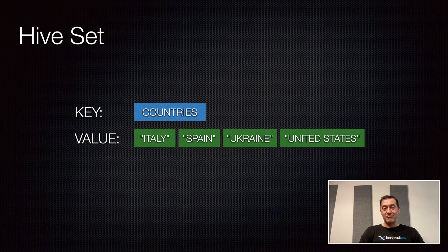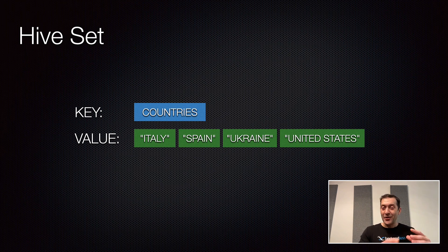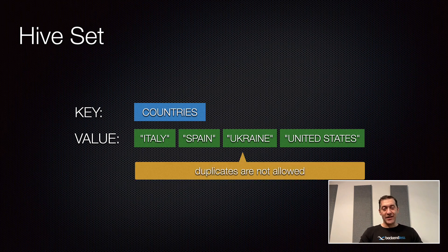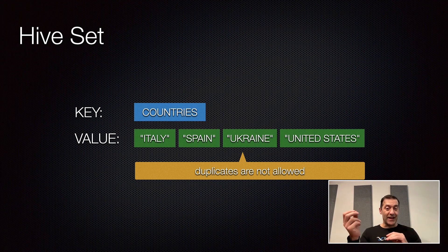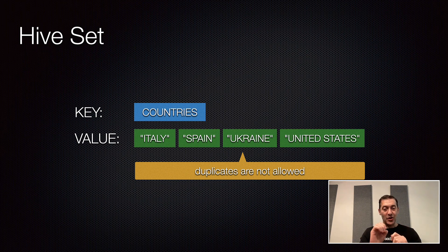Set is, once again, key-value. In this example, the name of the key is "countries," and the value for that key is a collection of individual values — in this case, the names of countries. Set is interesting because it does not support duplicates. If you were to insert an additional value into the countries key-value pair and that value already exists, it will be discarded because it is already in the set. So a set is a collection of values mapped to one key where those values cannot be duplicated, and any duplicate insert will be ignored.